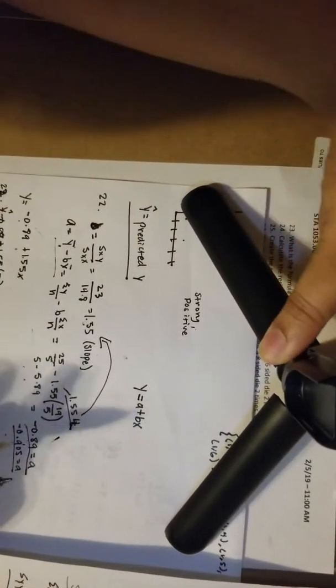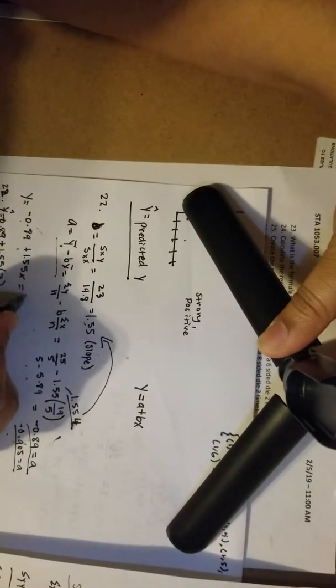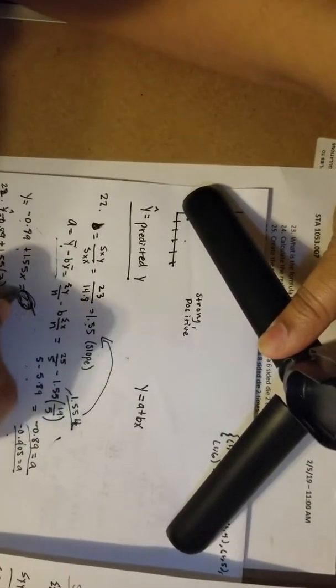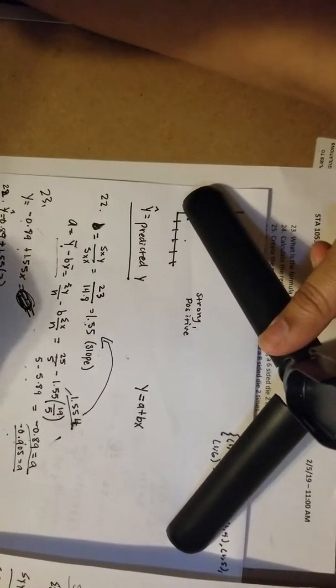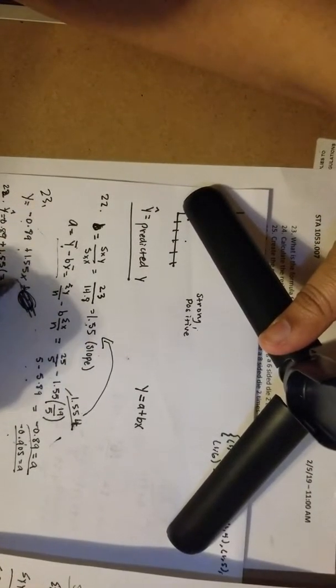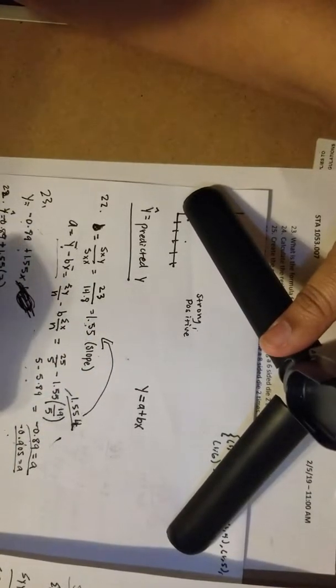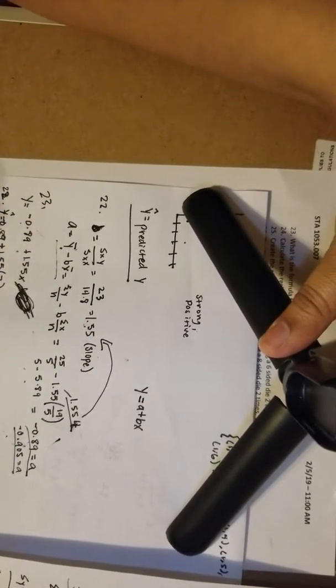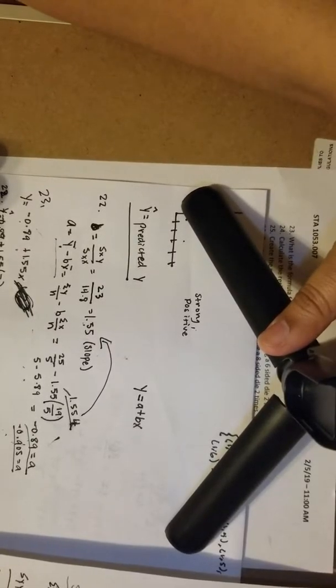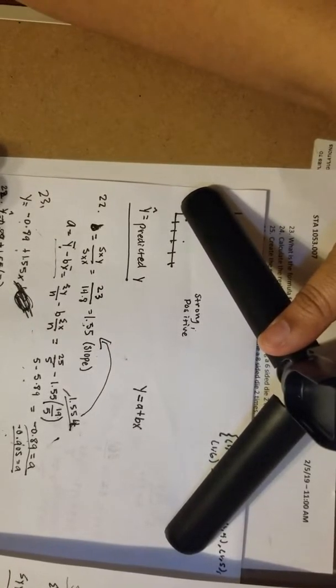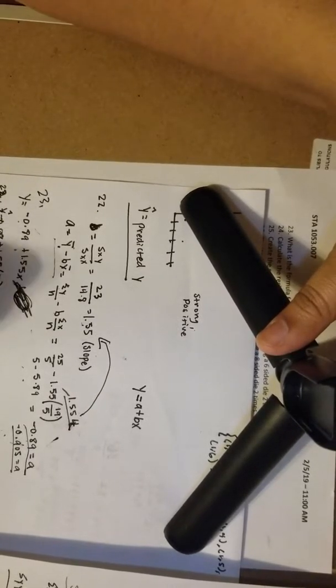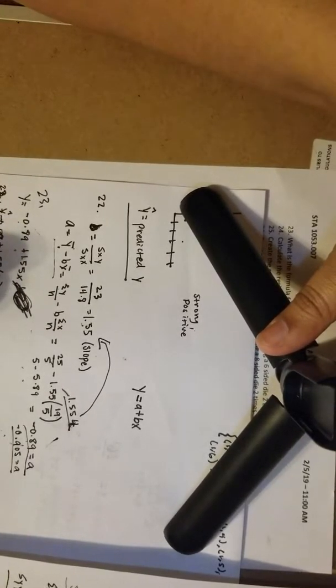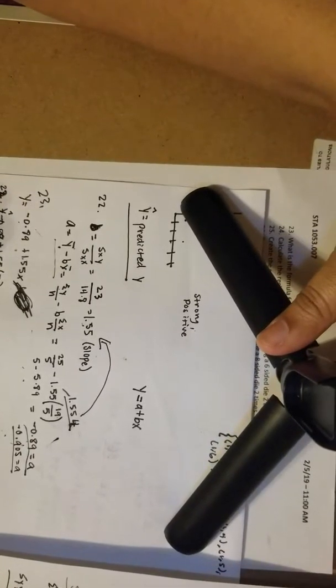Number 22, to calculate that, we just—remember we went over that—the predicted value of y, y hat is this. So we just plug 7 in with x right there, and when you plug 7 in, you do 1.55 times 7 plus negative 0.89.